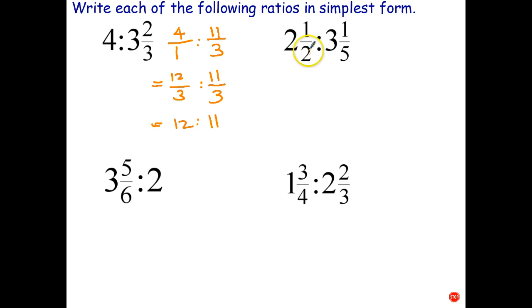Okay, let's have a go at this question here. 2 and a half is to 3 and 1 fifth. So to start with we write each of these as an improper fraction. So 2 times 2 is 4 plus 1 is 5. So that's going to be 5 over 2. 5 times 3 is 15 plus 1 is 16. So that's going to be 16 is to 5.